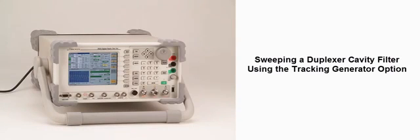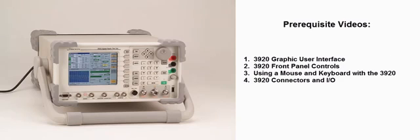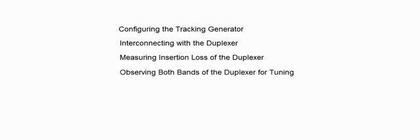This video presentation will demonstrate how to use the 3920 Digital Radio Test Set Tracking Generator option to sweep and tune a duplexer cavity. This video will provide training for configuring the tracking generator, interconnecting with the duplexer, measuring insertion loss of the duplexer, observing both bands of the duplexer for tuning, and measuring the duplexer filter notch depth.